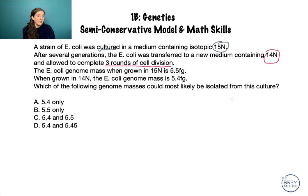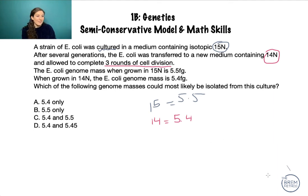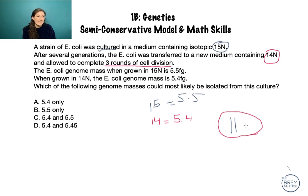The question tells us the mass when grown in 15N is 5.5, and the mass when grown in 14N is 5.4. It's not a big difference, which makes sense — these are just isotopes — but there is a measurable difference between DNA that has just 14N and DNA that has just 15N. The question asks: which genome masses could most likely be isolated from this culture? The safest way is to draw out the semi-conservative model. I'll start with my 15N in blue since that's our original. We have one E. coli cell, double-stranded, and this is the point at which we put it into the new 14N medium.